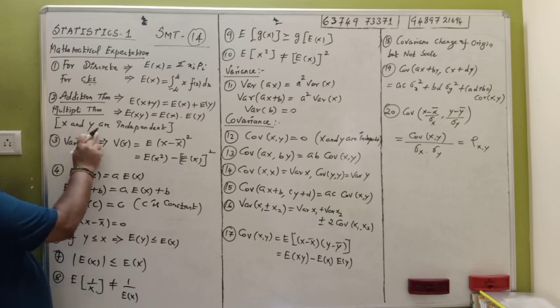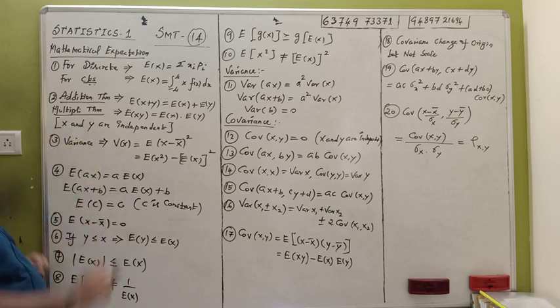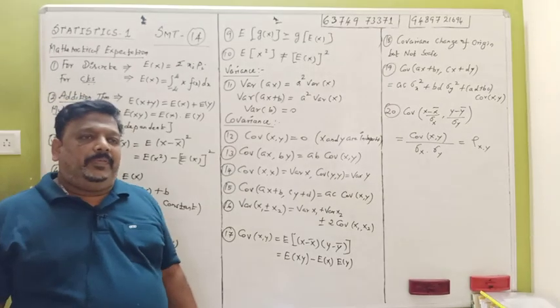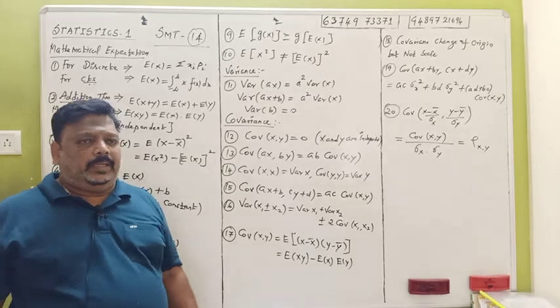When X and Y are independent, E(X · Y) = E(X) · E(Y). That is, P(A) = P(A) · P(Y) when X and Y are independent.